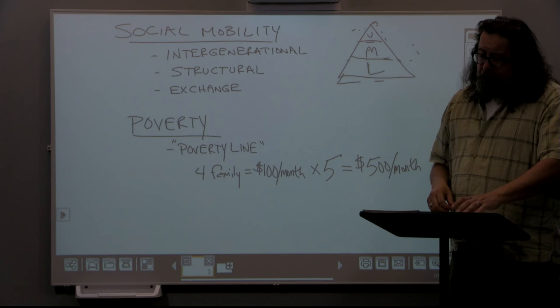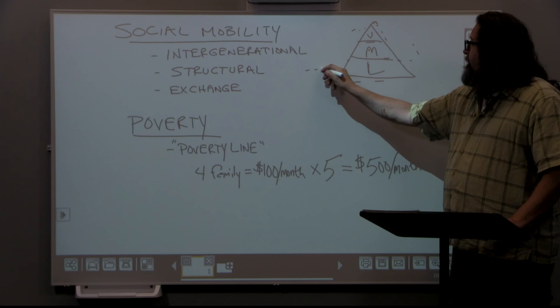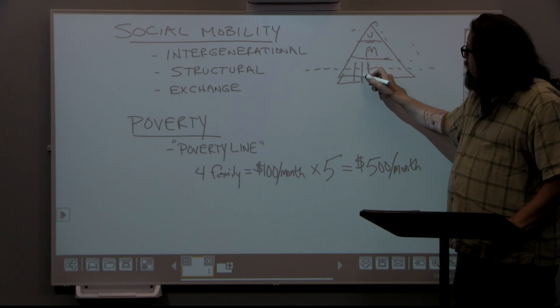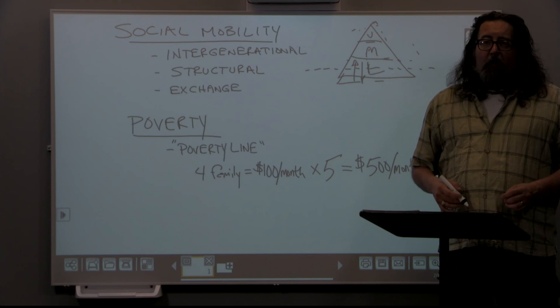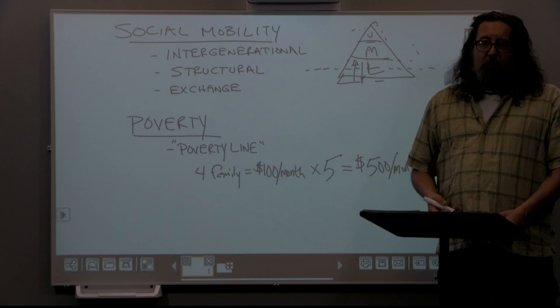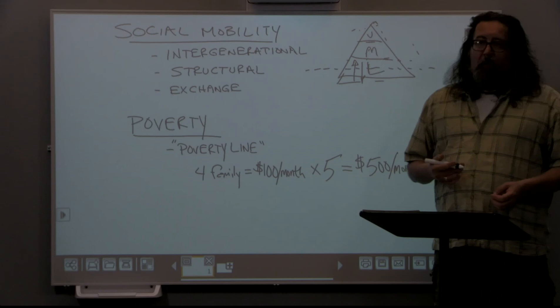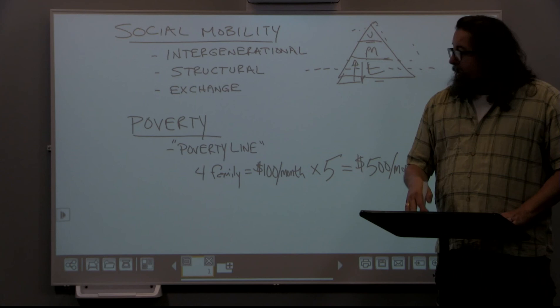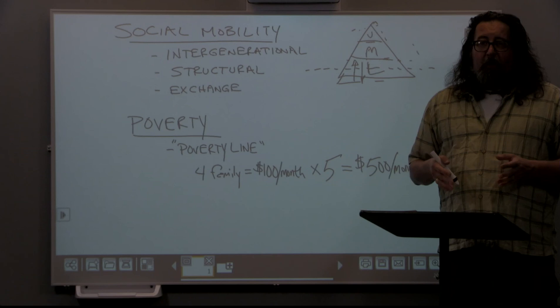Returning to exchange mobility — for every person that goes up, another goes down. We see constant movement across the poverty line. When families fall below the poverty line, they're not likely to stay there very long — usually about a year. Causes include losing a job, family illness, or other crises, and families generally recover and pull themselves back above the line. But exchange mobility means for every family that pulls itself up, another is likely moving down, which is why the number of people living in poverty has remained relatively stable.